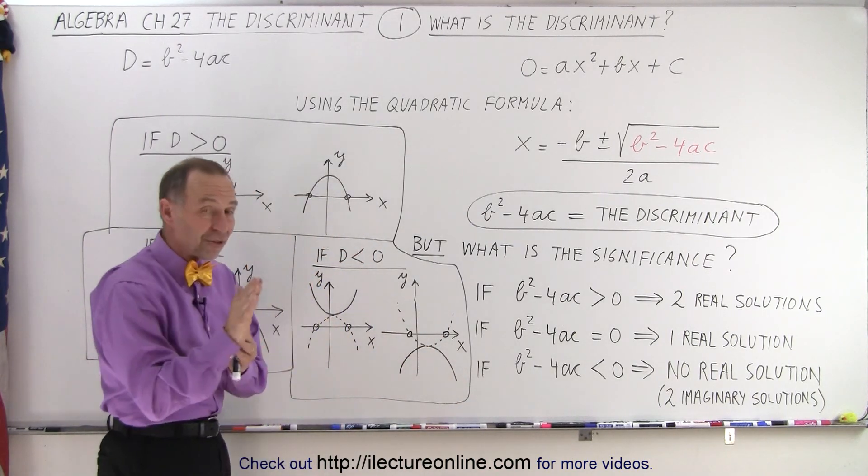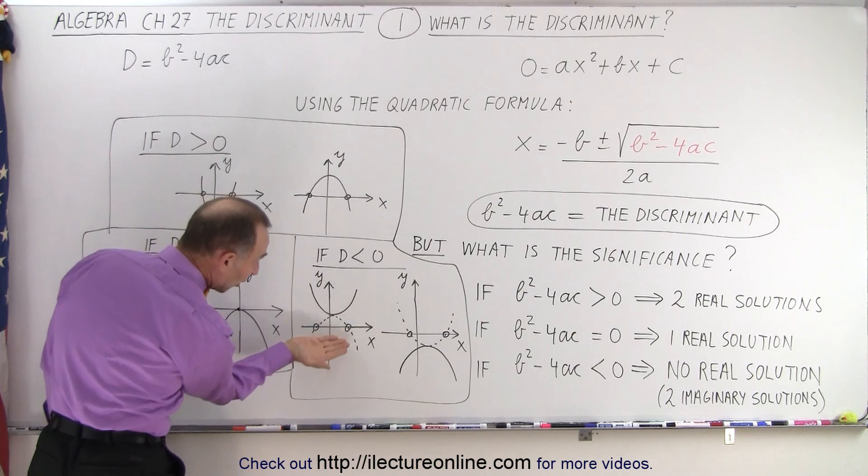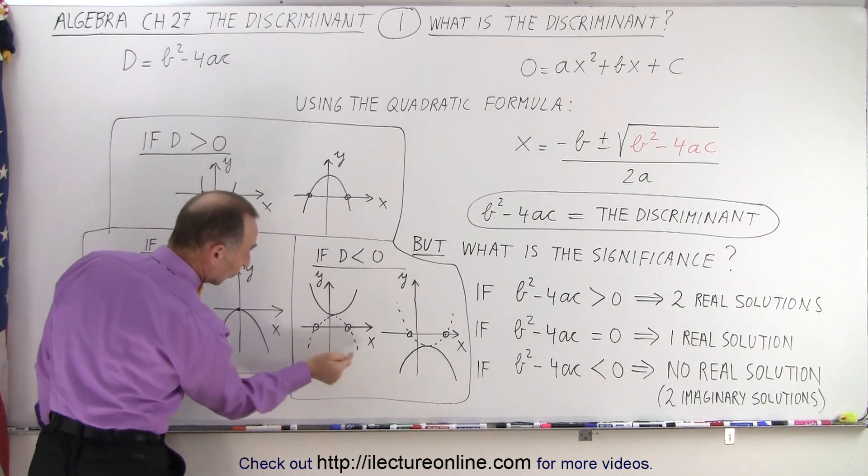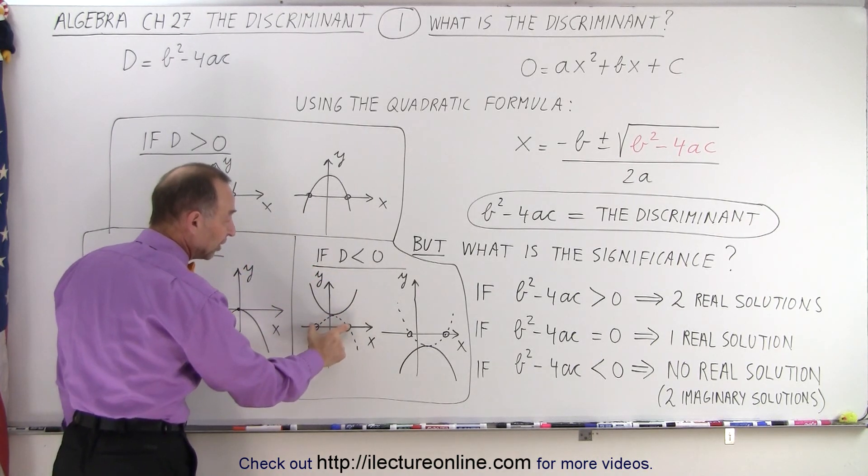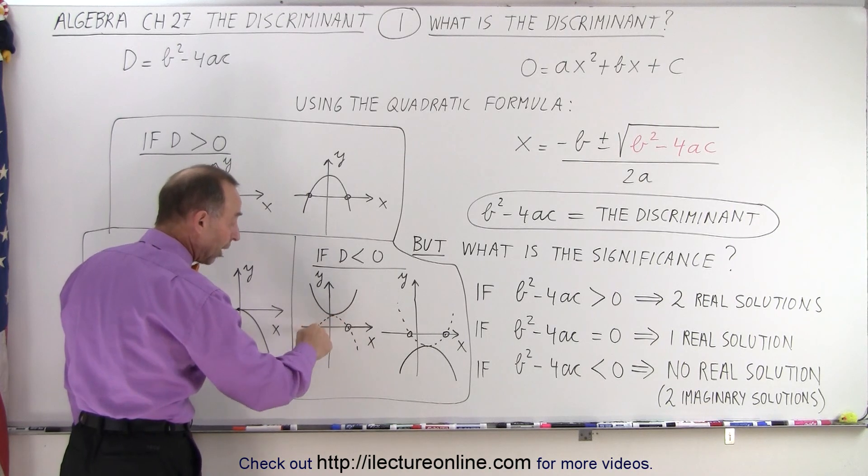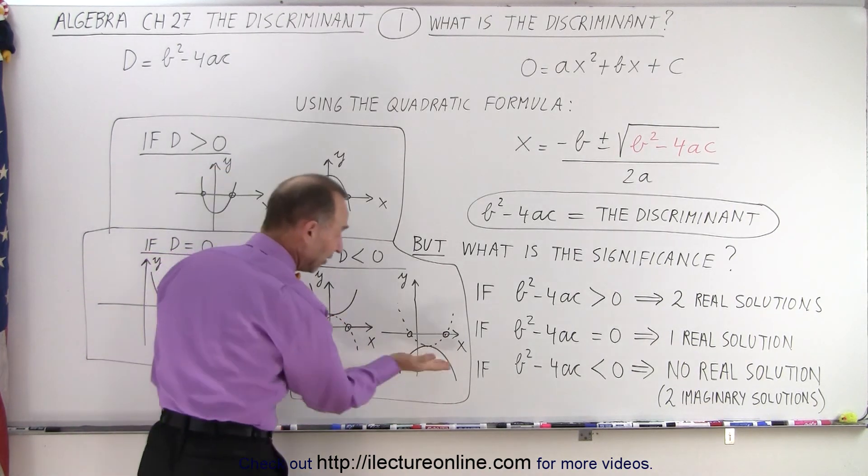But then if you take the mirror image of that graph, just kind of flip it over. So there's the mirror image. You see that the mirror image will touch or cross the x-axis in two places.